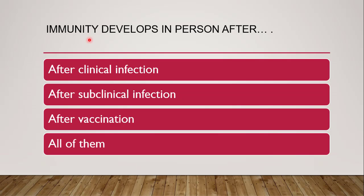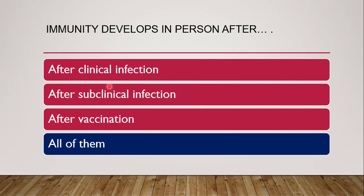Next question: immunity develops in a person after clinical infection, subclinical infection, or vaccination — or all of them. The correct answer is all of them. After clinical infection — where the person is exposed with proper symptoms — immunity can develop. In subclinical infection, when the infection is asymptomatic, immunity can also develop. And after vaccination, it is obvious the person will develop immunity. So the correct answer is all of them.